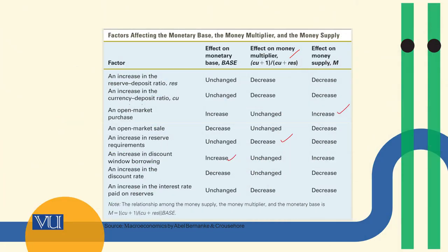So now let's see how different factors can influence the money supply. First of all, an increase in the reserve-deposit ratio: the money multiplier will change. Given the value of the base, the money multiplier — which is this formula — will become smaller. As the reserve-deposit ratio rises, the money multiplier will be lower and the addition to money supply will be less.